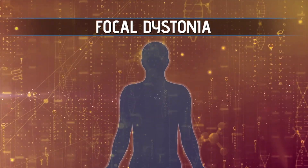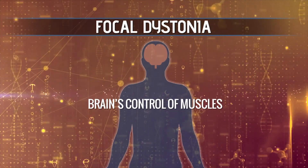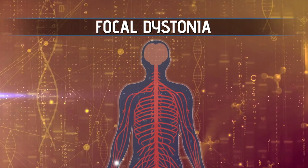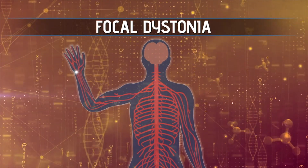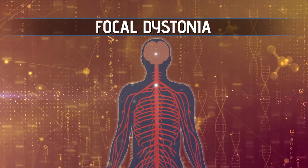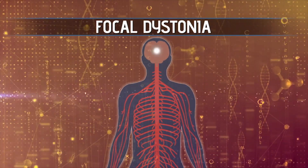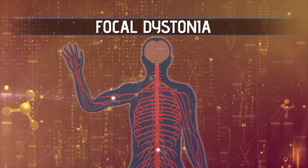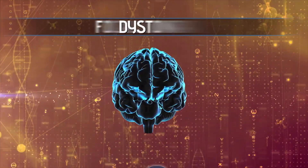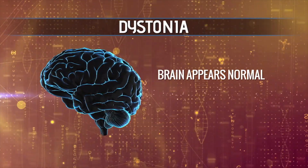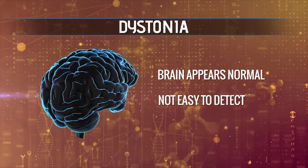Focal dystonia is a problem of the brain and specifically the brain's control of the muscles. When people move, those commands to make movements come from the brain, mediated through the spinal cord. The brain sends signals down to the spinal cord, and the spinal cord sends signals to the muscle to cause the contraction. In dystonia, if you look at the brain, at least superficially, it looks normal, so it's not easy to identify where the problem is.